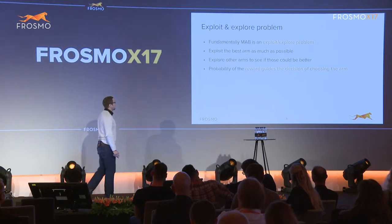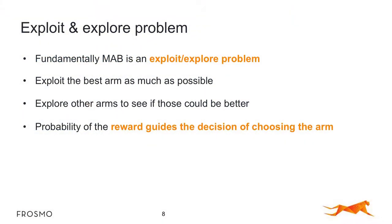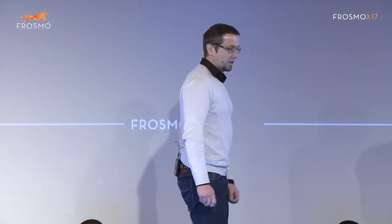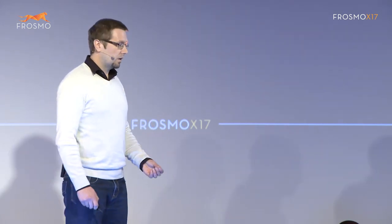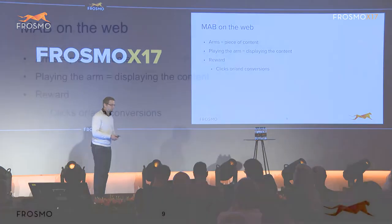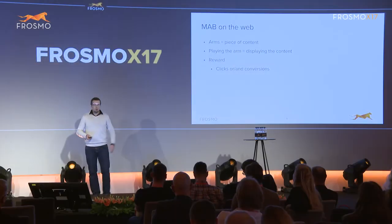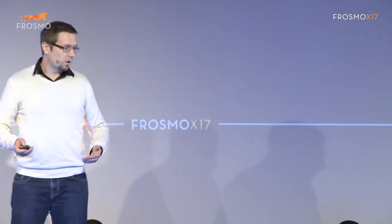What the multi-armed bandit is, fundamentally, is an exploiting and exploration problem. You exploit the best-working arm, but you still want to explore the other ones. The probability of the reward guides your decision in selecting the arm. On the web, the arm is one piece of content, and multiple arms are multiple pieces of content. Playing the arm is displaying the content, and you measure results via clicks, conversions, or a combination of those.